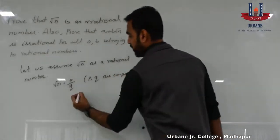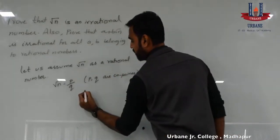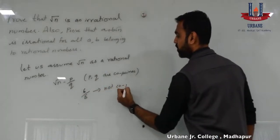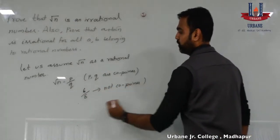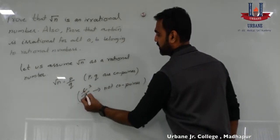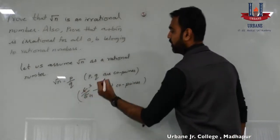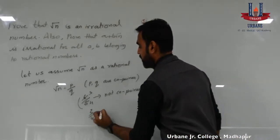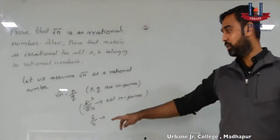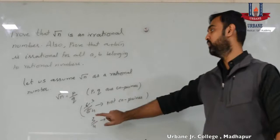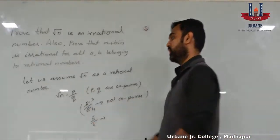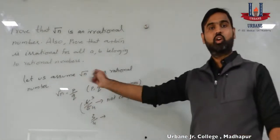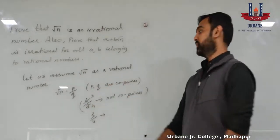What are co-primes? Let us consider 6 by 8. Is this a co-prime? No, not co-primes, because we have a common factor between 6 and 8 — we can cancel with 2. But 3 by 4, the values 3 and 4 are co-primes because you do not have a common factor between 3 and 4. So, let us consider √n is equal to p by q, where p and q do not have any common factor, which means they are co-primes.